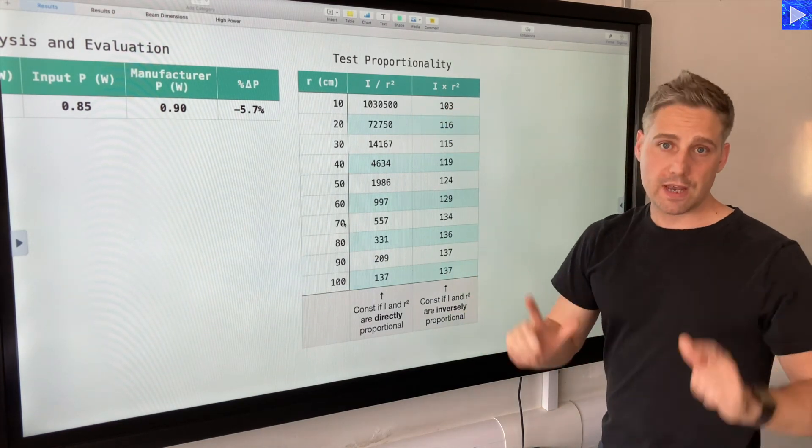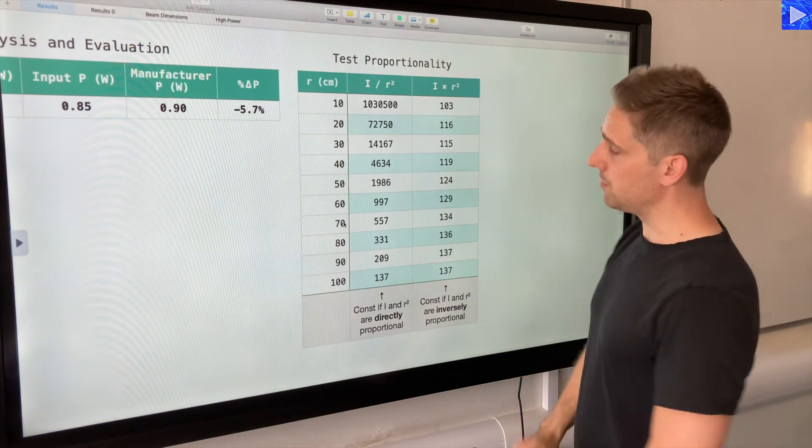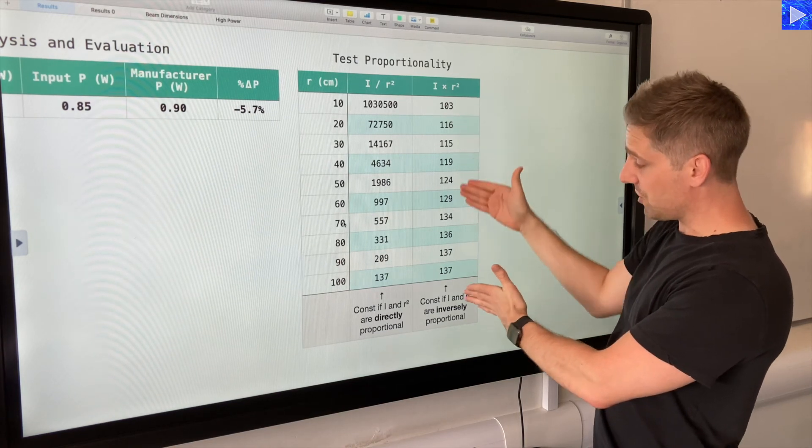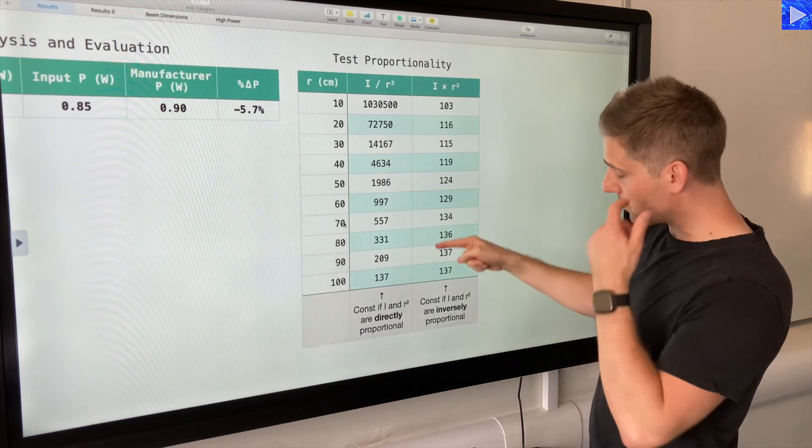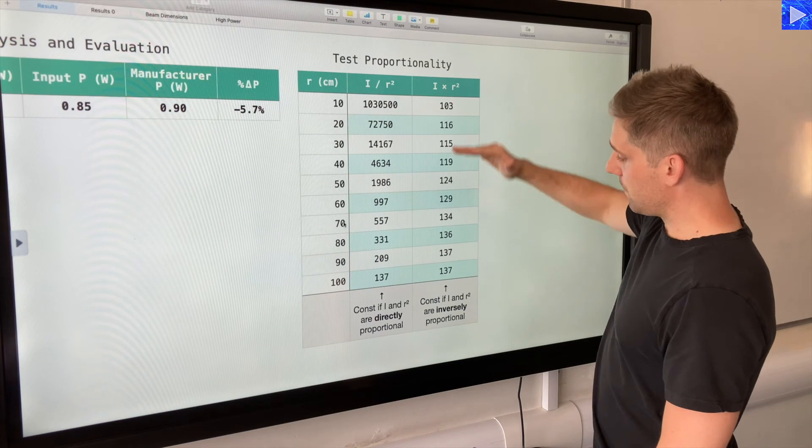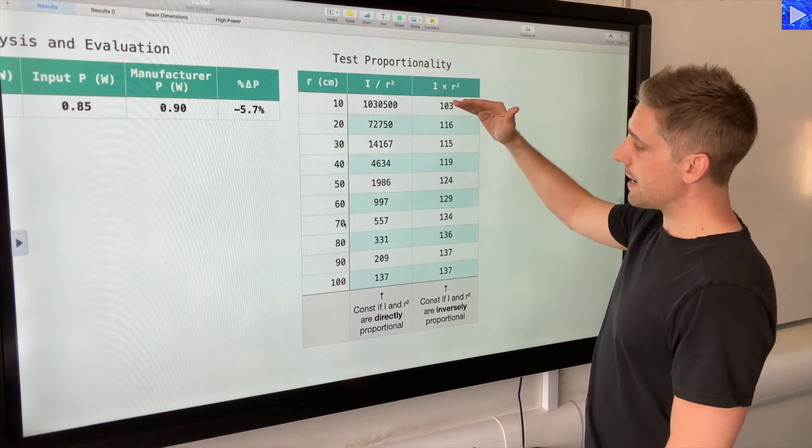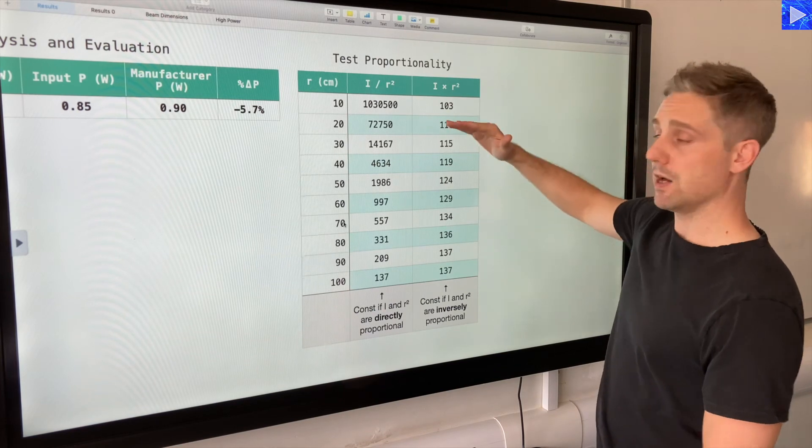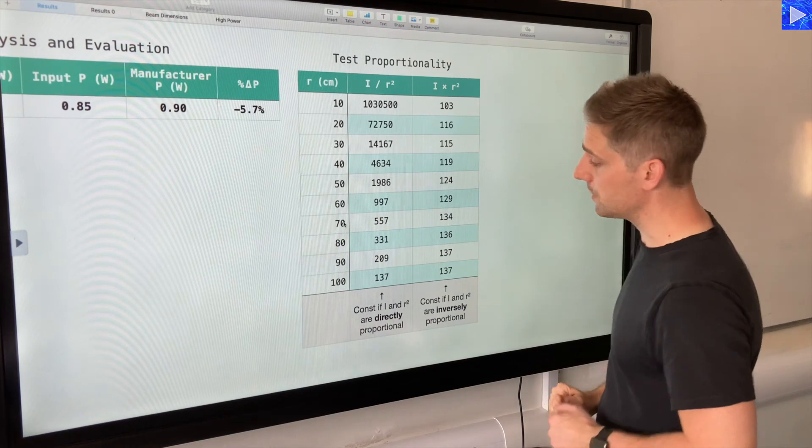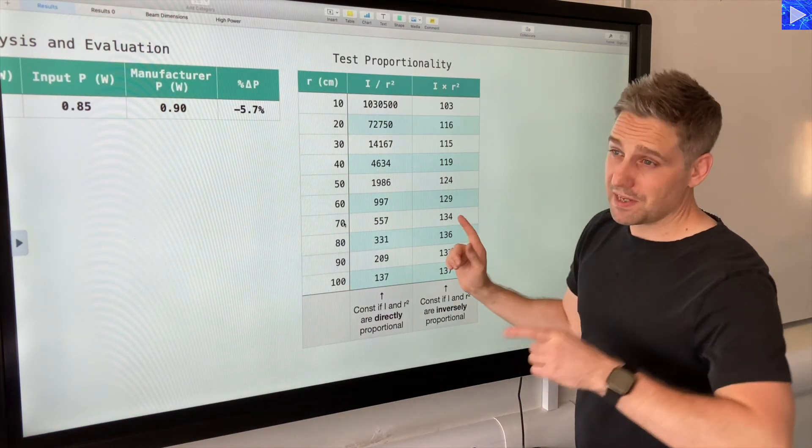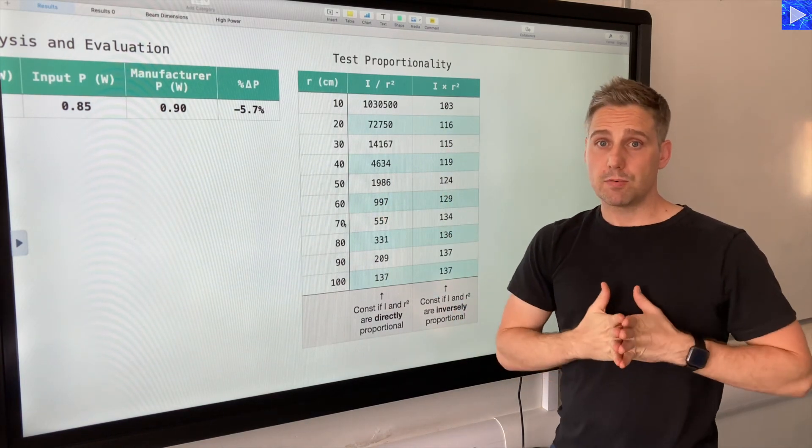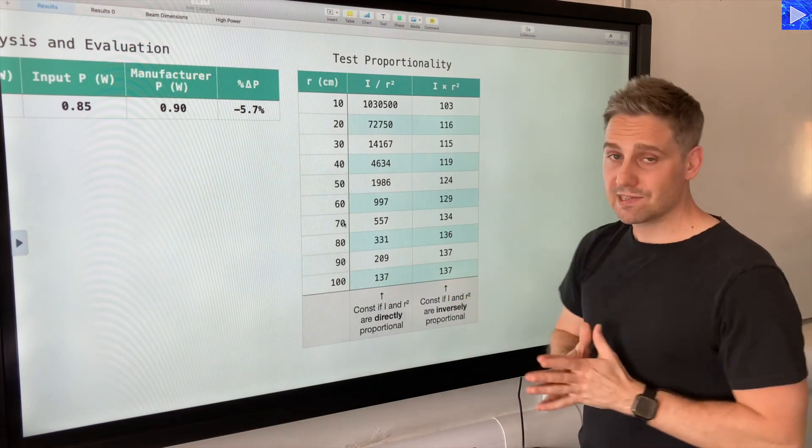What about the inverse proportionality? Well, if you take I and you multiply it by r squared, then all these should be constant if they are inversely proportional. And the values here, you can see, we're getting much better agreement here. But over here you can see that the values are going up. So perhaps over this range here they are not inversely proportional, and maybe here they are. Maybe if we took more measurements we could verify that.